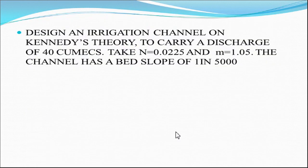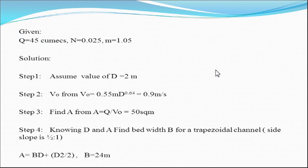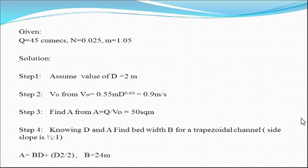Now we solve an example using Kennedy's theory. Problem: design an irrigation channel on Kennedy's theory to carry a discharge of 45 cumecs. Given: n (rugosity coefficient) = 0.025, critical velocity ratio m = 1.05, and bed slope S = 1 in 5000. This is a Case 1 problem. Step one: assume d = 2 m. Then calculate the critical velocity V₀, which gives approximately 0.9 m/s.